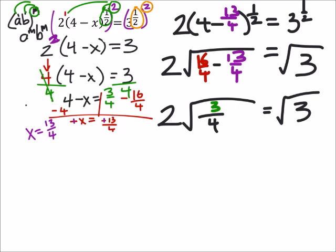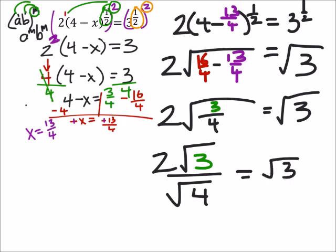So I'm going to take two times the square root of three, and that would be divided by the square root of four. This should equal the square root of three, right? Well, the square root of four is two.